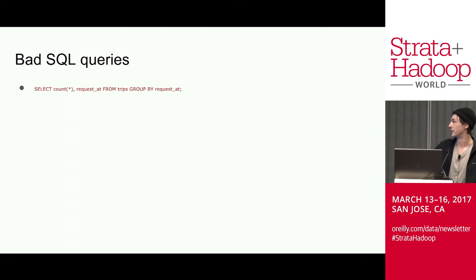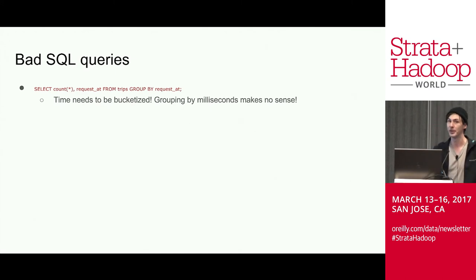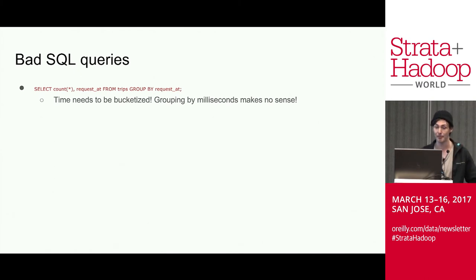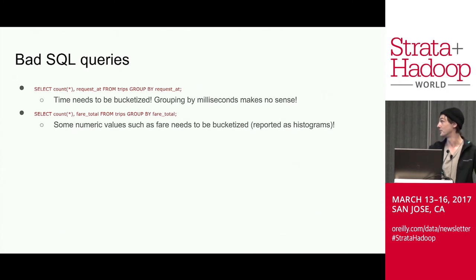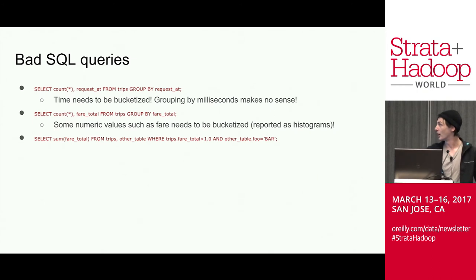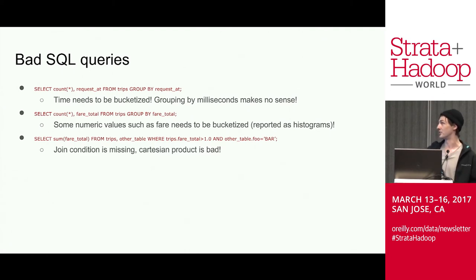Let's talk about bad queries. SELECT COUNT(request_at) FROM trips GROUP BY request_at — since request_at is milliseconds since epoch, that's super high cardinality and will do terrible things to your query layer and database. Grouping by milliseconds makes no sense; we reject this. SELECT COUNT(fare_total) GROUP BY fare_total — fare_total is a float; this doesn't make sense and should be reported as a histogram. SELECT SUM(fare_total) FROM trips, other_table WHERE some conditions — if you forgot to set up a join condition, you've done a Cartesian product, which will do terrible things to your database.